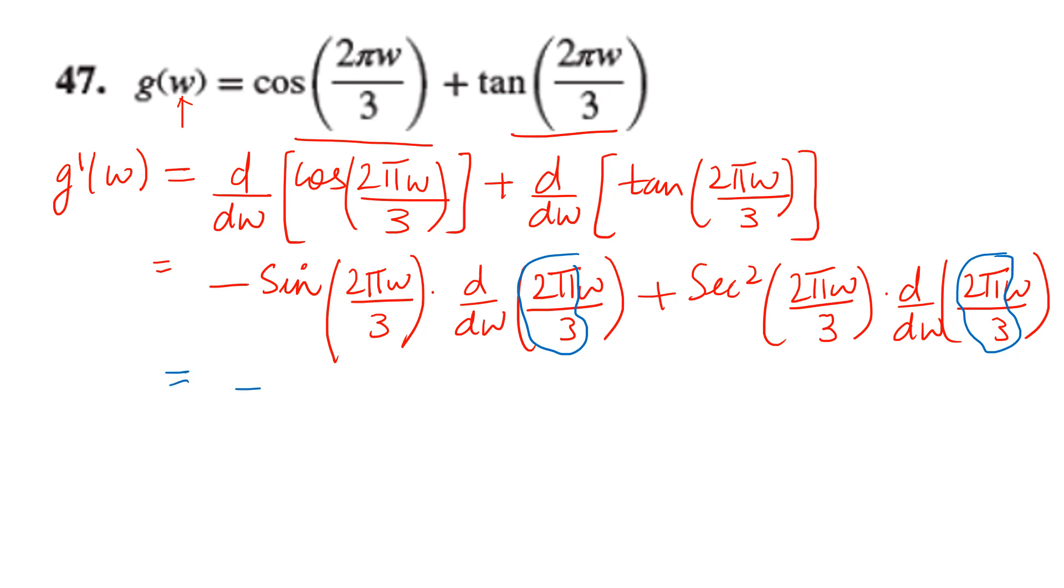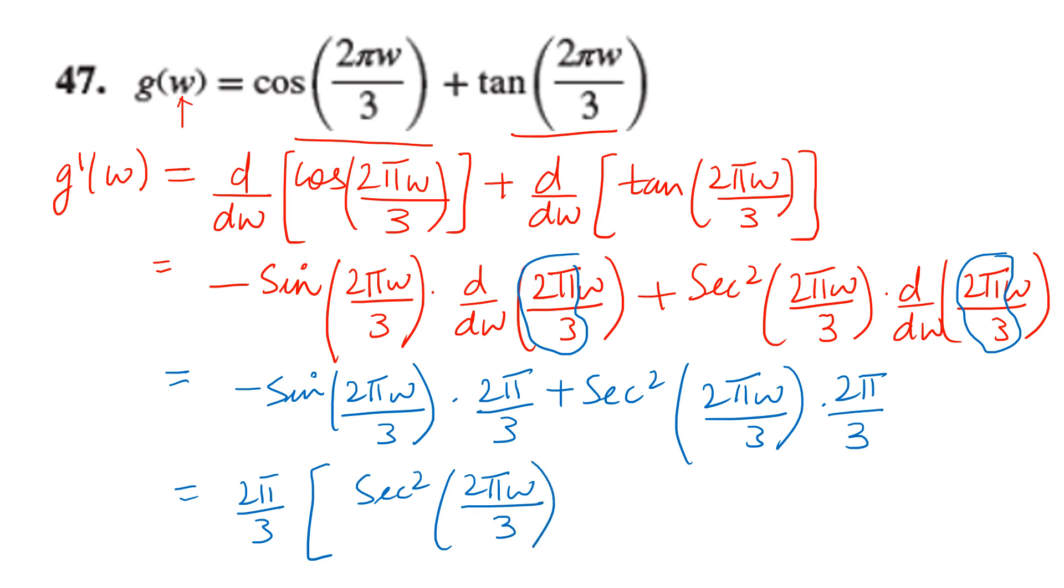Look here carefully: when I am differentiating with respect to w, this w and this w will cancel. You will just be left with 2π by 3, similarly here also 2π by 3. So dw by dw is 1. Here now you get minus sin(2πw/3) same value. Here you get 2π/3 plus secant²(2πw/3) and this is 2π/3. Now something is common: 2π by 3 you can take it common, and inside you have secant²(2πw/3) minus sin(2πw/3). So even though the question seemed difficult, it was pretty easy. We finished it in three simple steps and we just collected the like terms together.